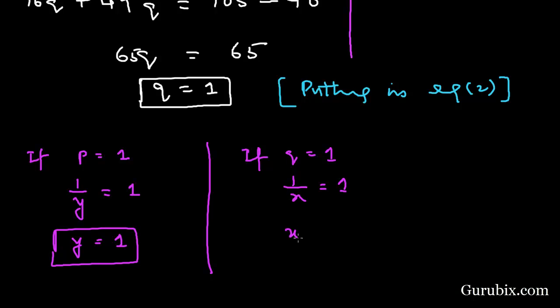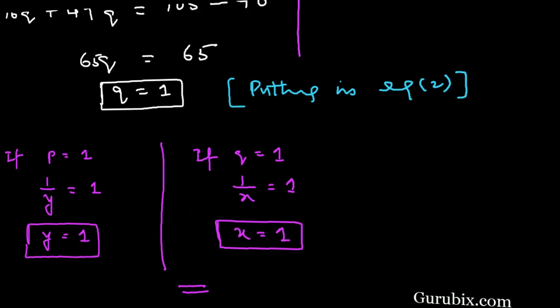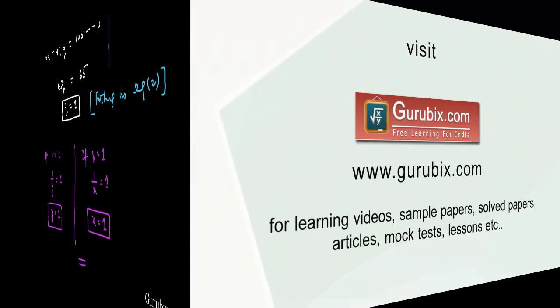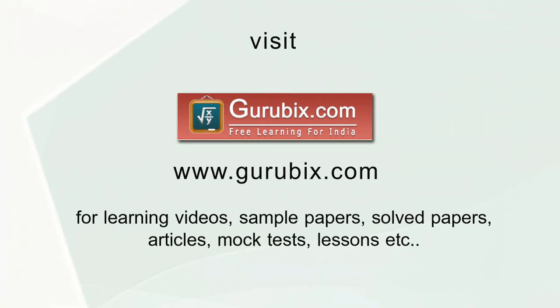Since p equals 1 over y equals 1, we get y equals 1. And since q equals 1 over x equals 1, we get x equals 1. Therefore x equals 1 and y equals 1 is the solution of the question. Thank you.